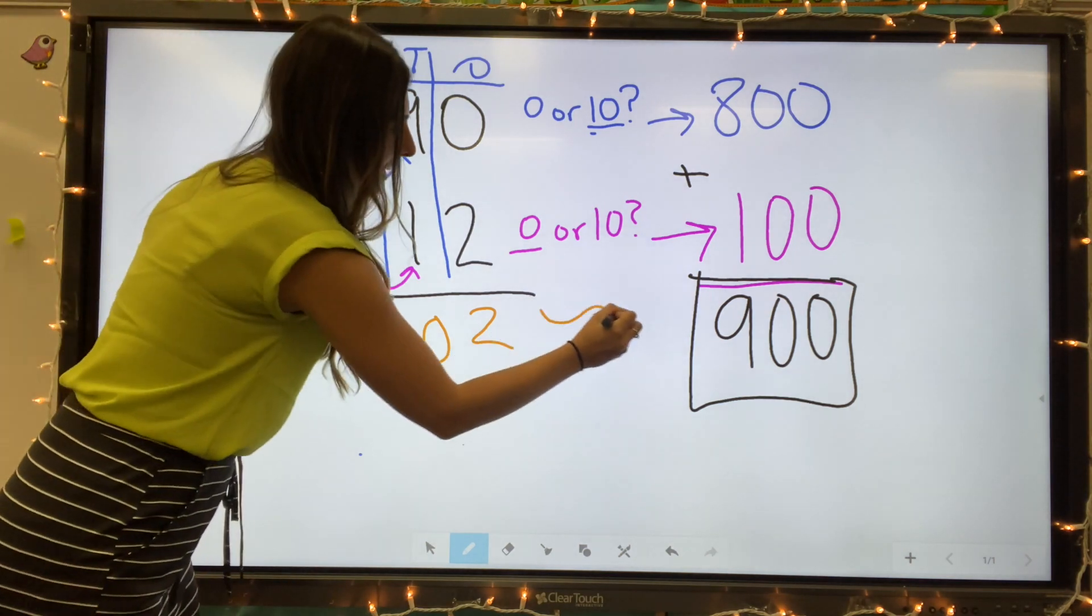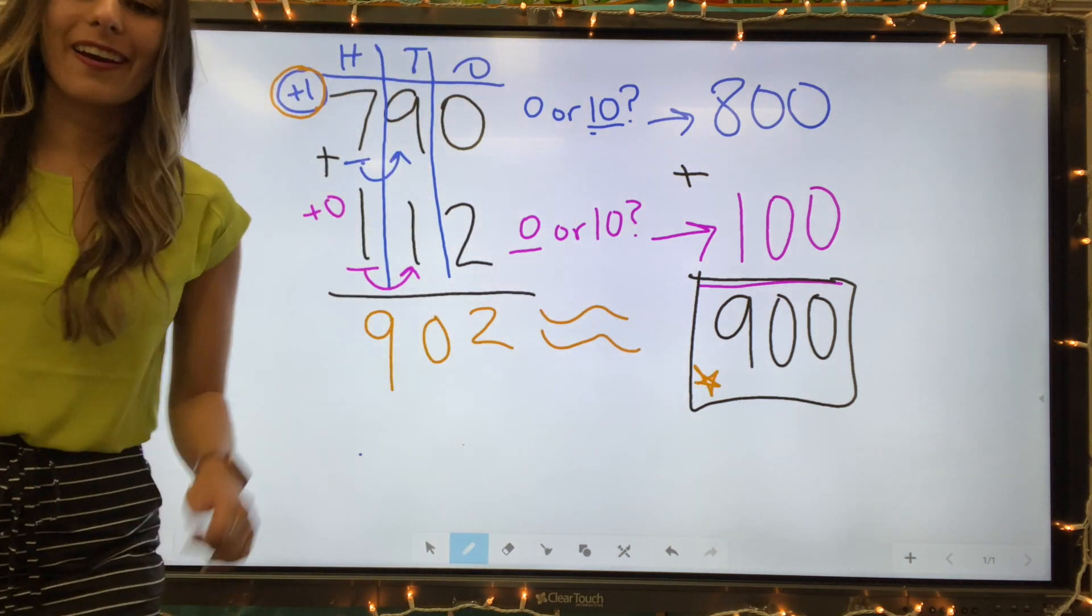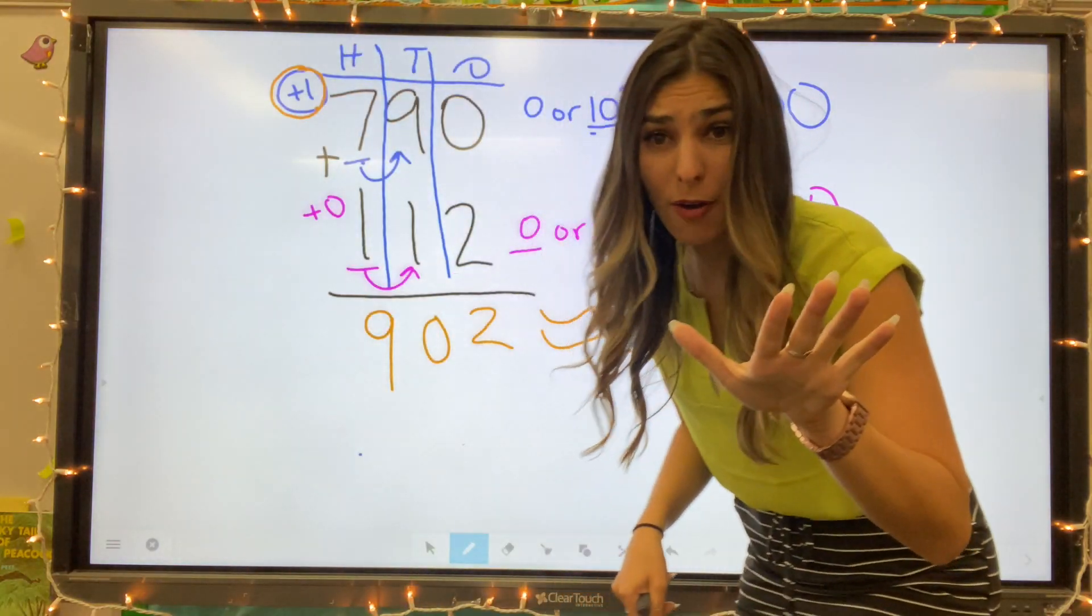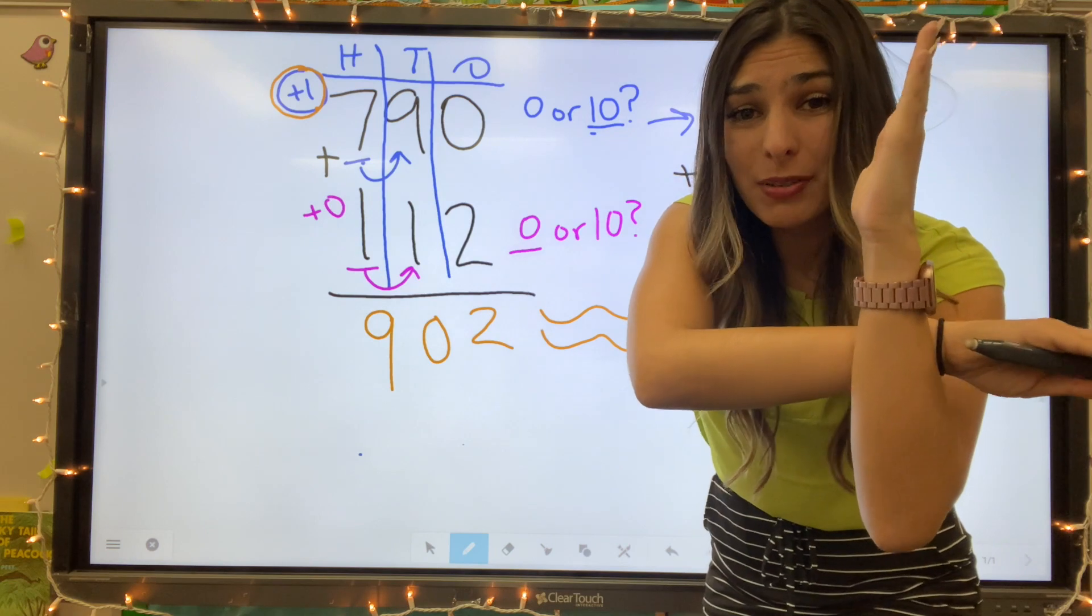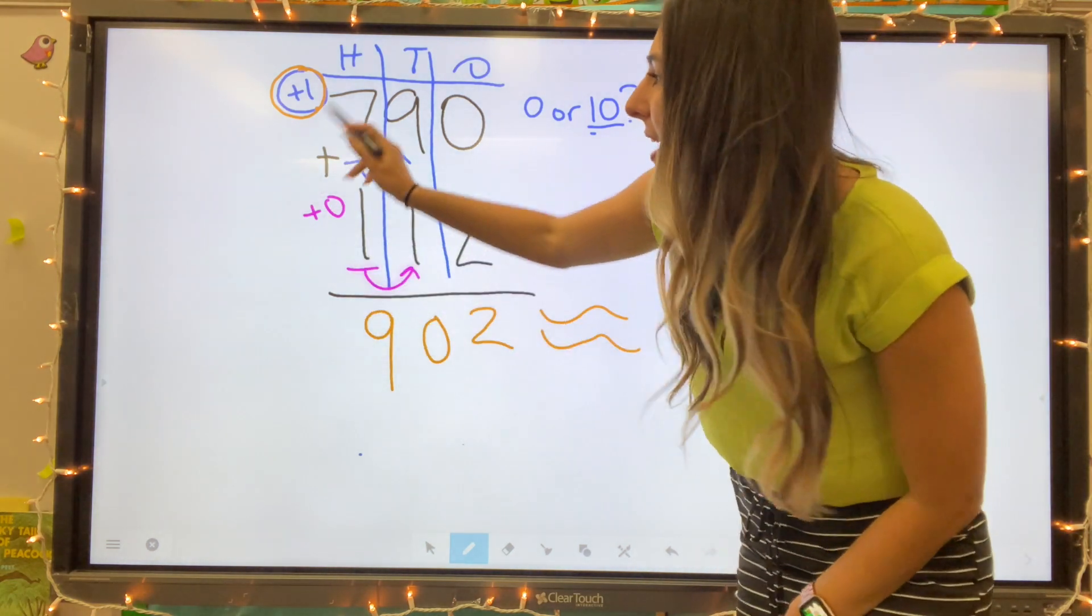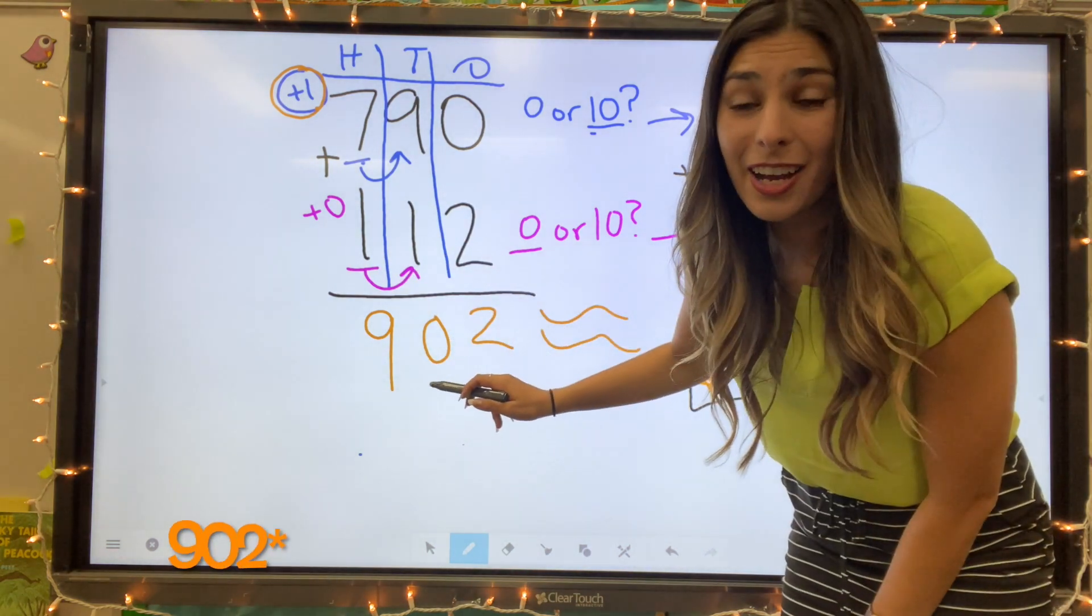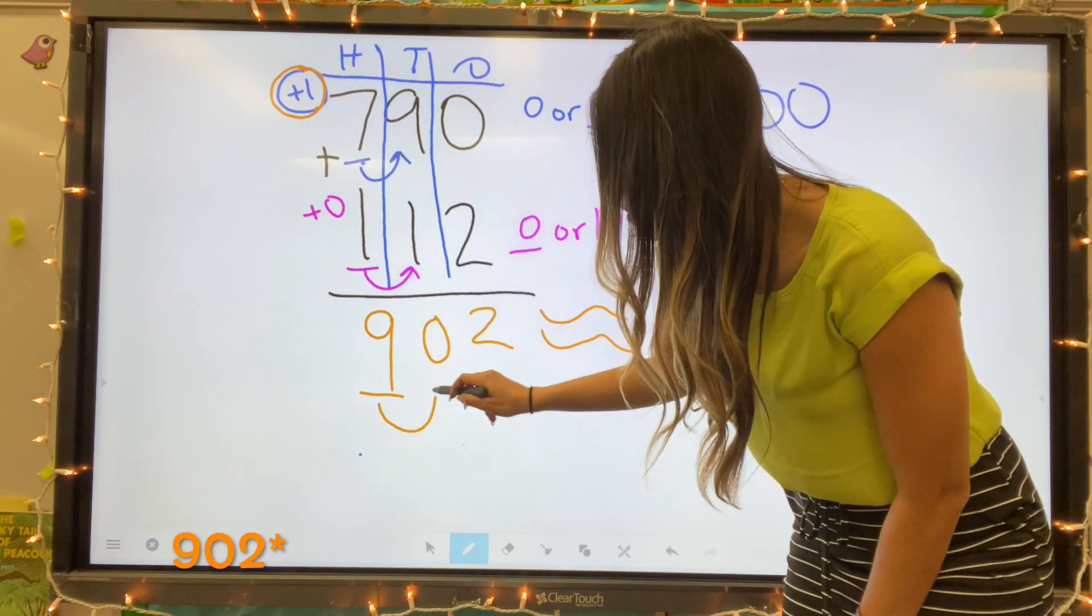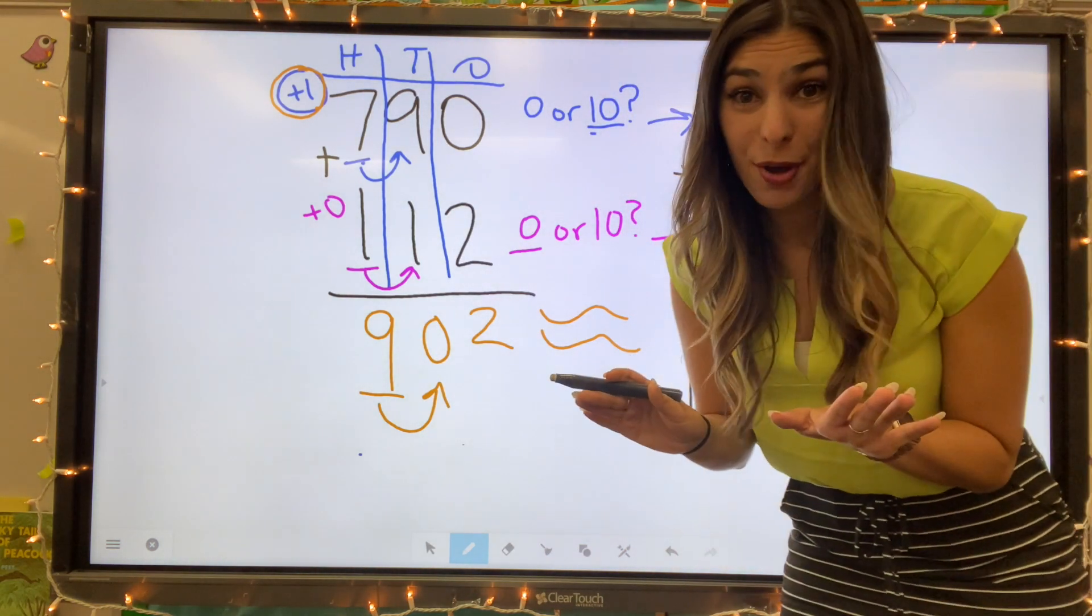902. Except we rounded to 900. We are all good. So just to go over our work. First, we rounded each number, added the rounded numbers and found the estimated sum. And we double checked that by adding up our original addition problem. And if we took 902 and rounded it to the nearest hundred, we would have gotten 900. That's how we know that we are correct.